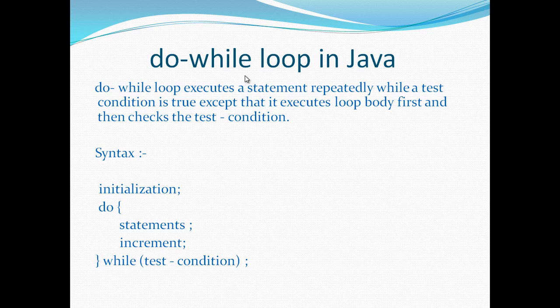If we look into the definition of do-while loop in Java, we see that the do-while loop executes a statement repeatedly while a test condition is true, except that it executes the loop body first and then checks the test condition. In the while loop, we always check the test condition first, and based on whether it is true or false, the body of the while loop gets executed. But in the do-while loop, first the body gets executed and then we check the test condition.